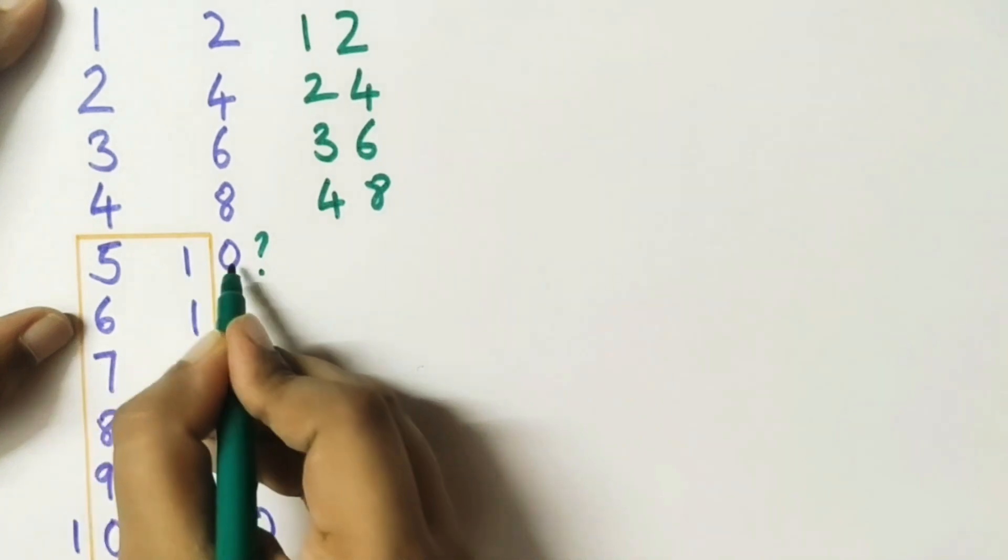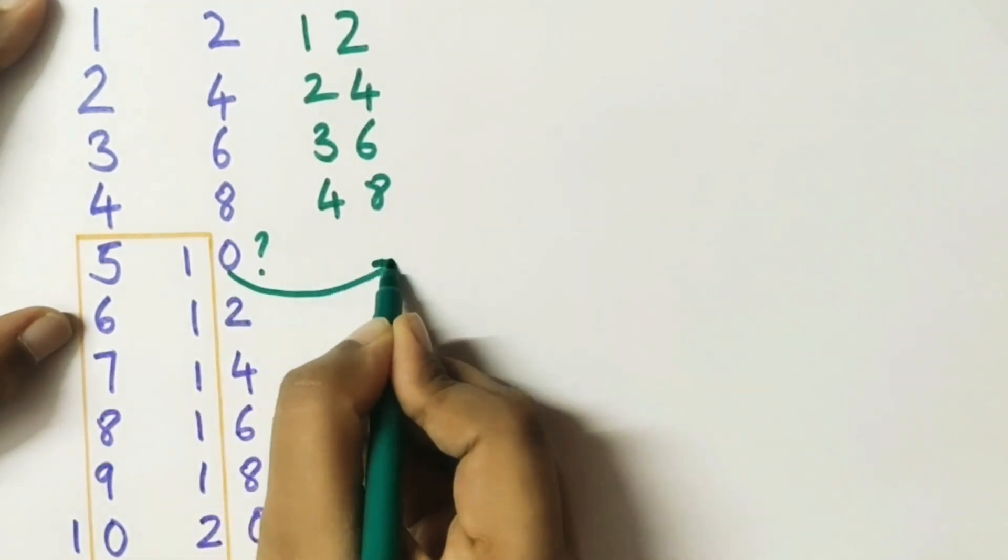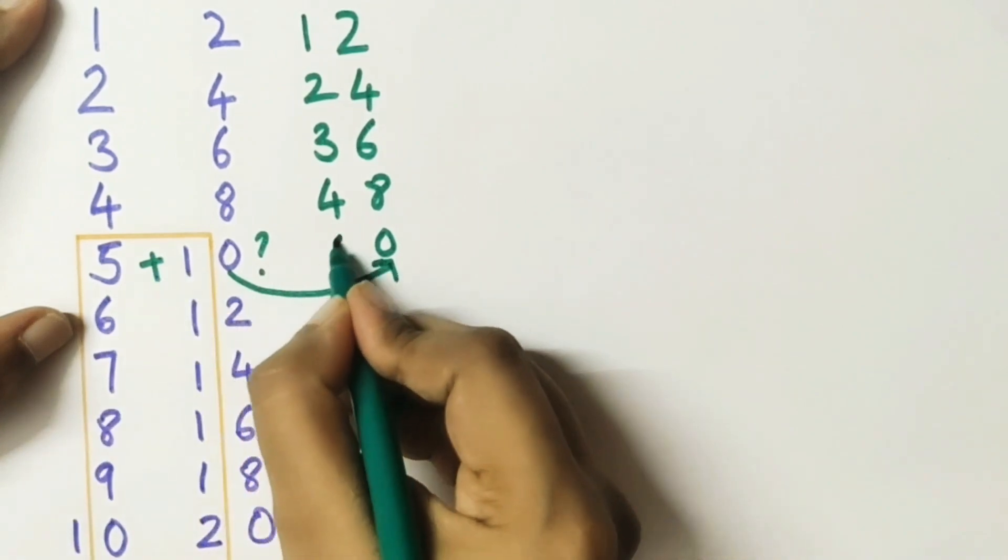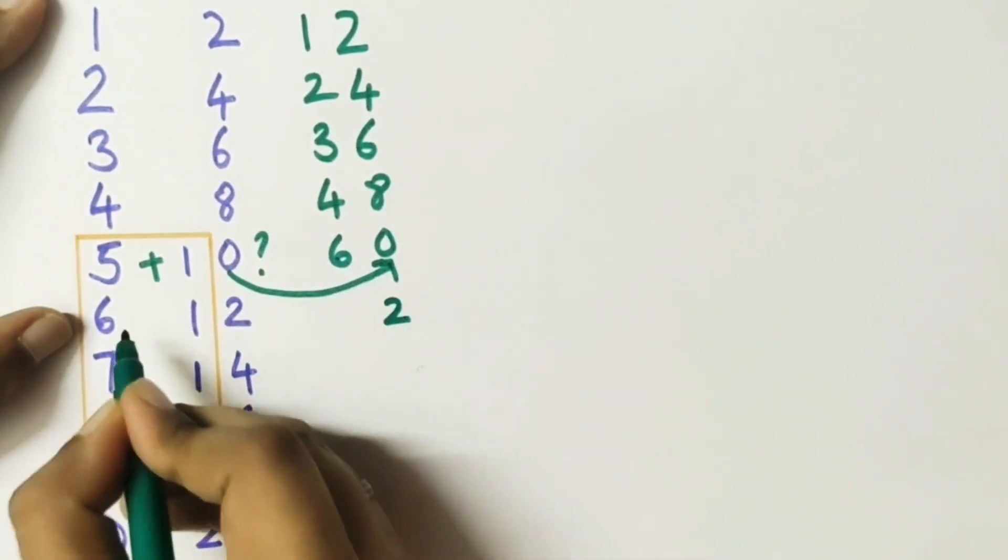Then we will pick up 0, put it here, add 5 plus 1 equals 6. So this way we will apply this trick for the rest of the table.